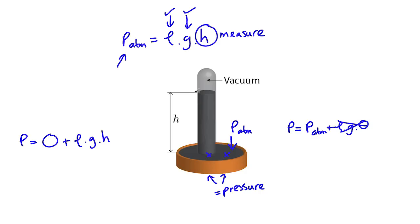This pressure gauge compares atmospheric pressure to vacuum, and since vacuum is the absolute zero on the pressure scale, it gives us the absolute value of atmospheric pressure. This is how a barometer measures atmospheric pressure. Had we left the long straw demo up, as atmospheric pressure varies over time, the height of water in the straw would rise and fall accordingly, since density and gravitational field strength are constant.